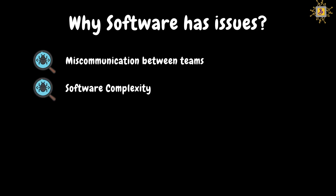The second reason is software complexity. Every software and application has many teams involved, many modules and sub-modules, many dependencies, many vendors and third-party systems. These complexities create many chances for issues. The third reason is programming errors — if a developer does not implement the logic or functionality properly, it will lead to software issues.